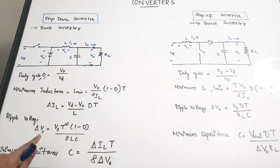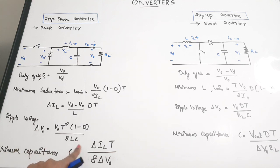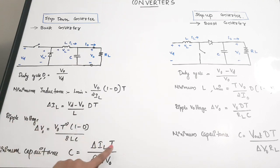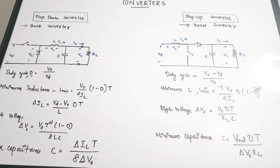The minimum capacitance required for the buck converter is: C_min = ΔIL × T / (8 × ΔVout), where ΔIL is the difference between minimum and maximum current across the inductance, T is the time period, and ΔVout is the ripple voltage across the output.